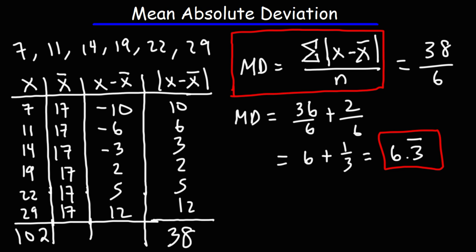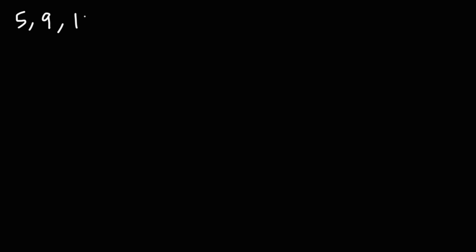Now let's work on another example that illustrates how we could use this formula without the use of the data table. So let's say we have the numbers 5, 9, 12, 16, and 18. Feel free to pause the video if you want to and go ahead and calculate the mean absolute deviation for this set of numbers.